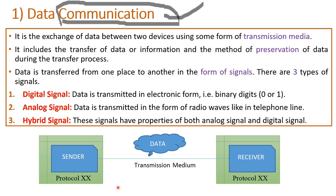For example, if you are sending a WhatsApp message to your friend, or sending a video or a photo, that is called the data. That data is communicating or getting transferred. When you are sharing a particular image, that data has to be preserved — you cannot send a broken or faded image. Or if you are sending a voice message, it should go properly. This particular concept should take care of the preservation of data as well.